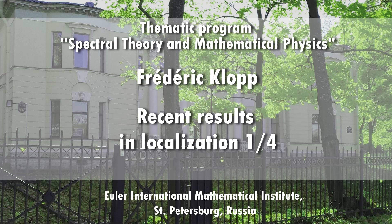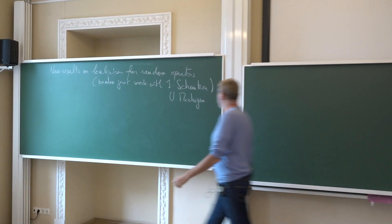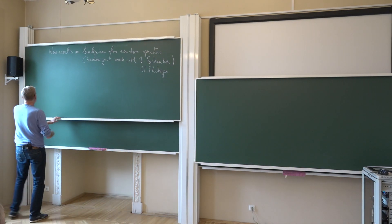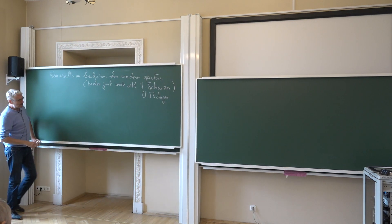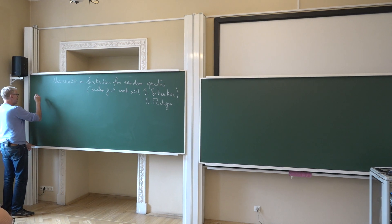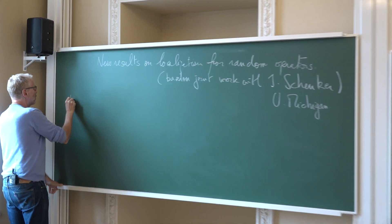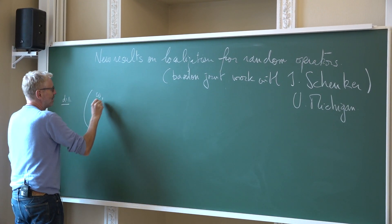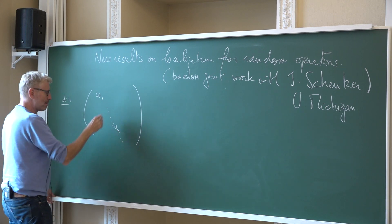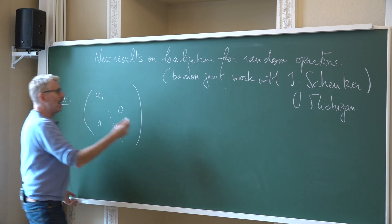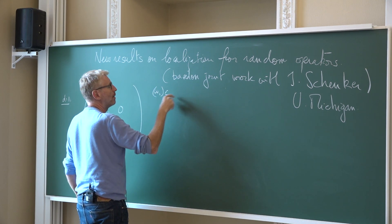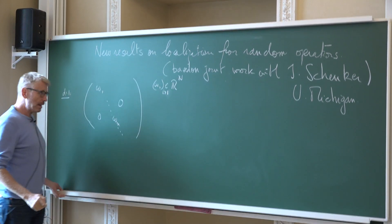I present some results obtained in joint work with Jeff Schenker. Let me remind you what localization is. To make it simple, I do as Alexander Pushnitsky did last week - I speak about matrices in one dimension. So d equals one. Let's consider the following matrix omega_n on the half axis, where the omega_i for i larger than one are real numbers.